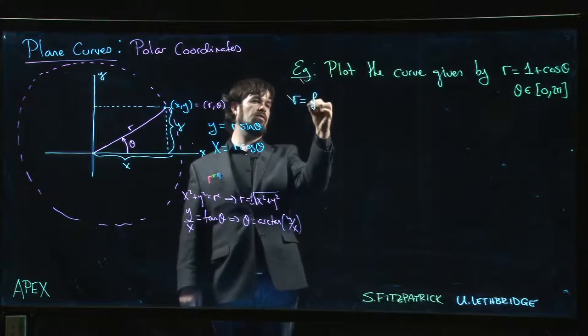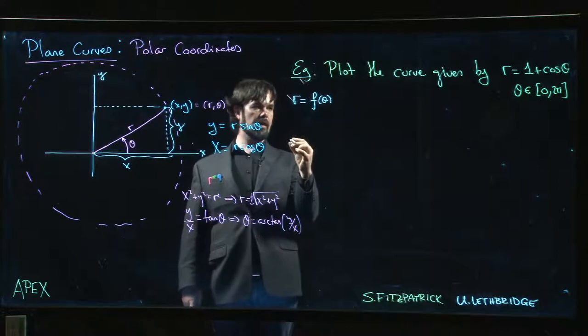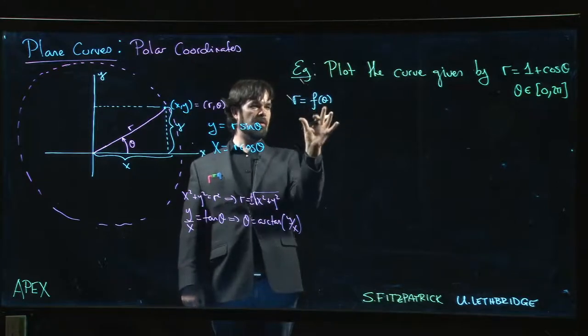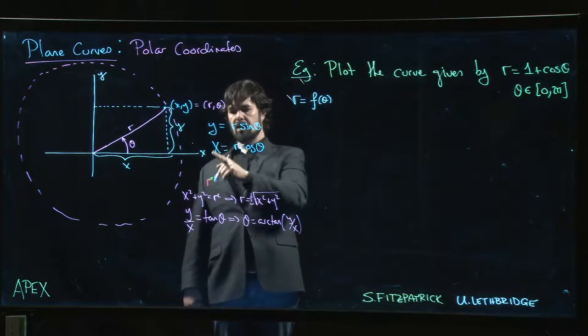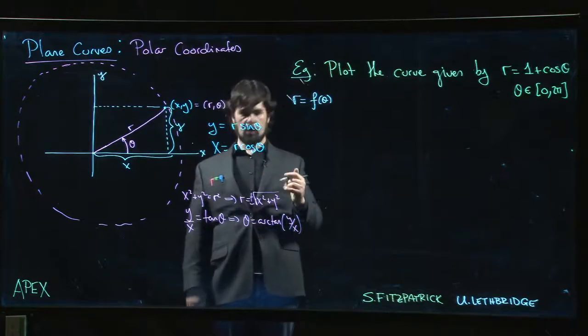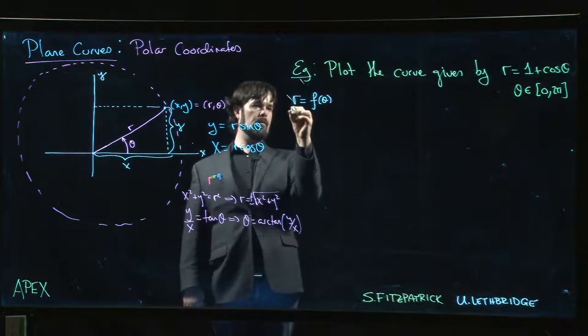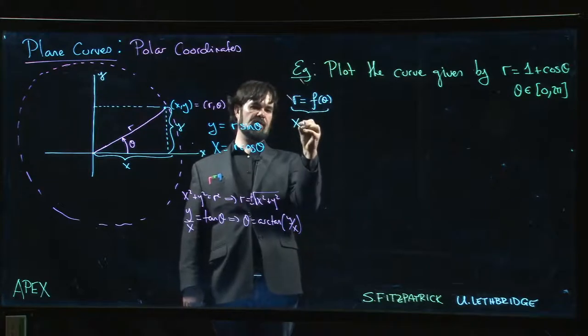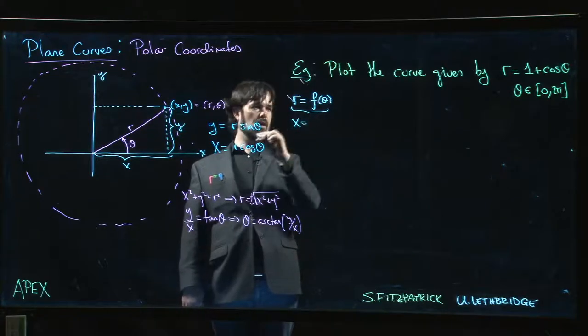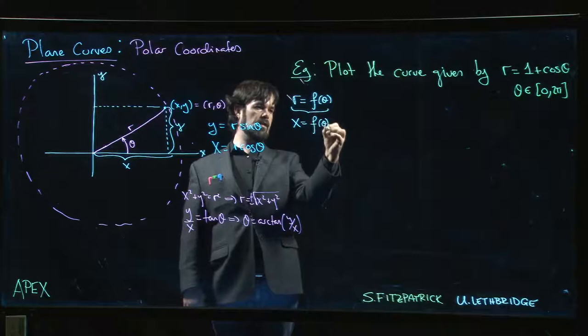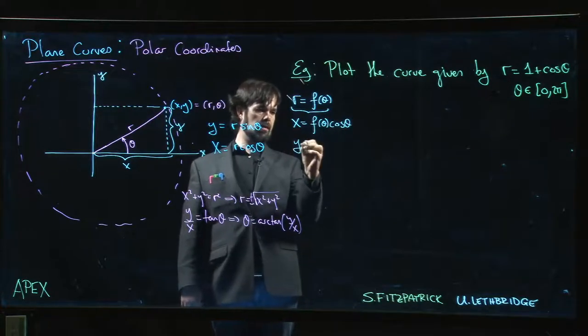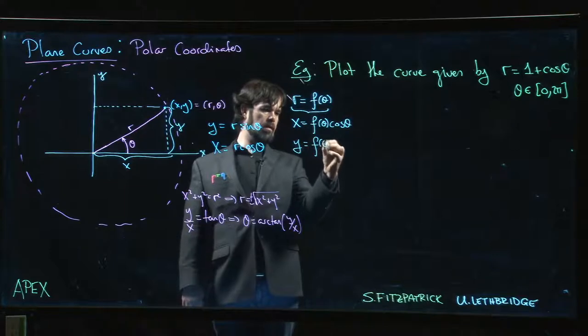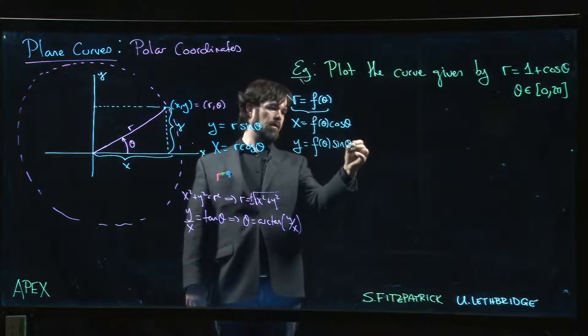r equal to some function of theta, it's a polar curve. It's actually a special type of parametric curve because y is r sine theta, x is equal to r cos theta. So actually what this gives me is that x is r which is f of theta cos theta, y is f of theta sine theta.